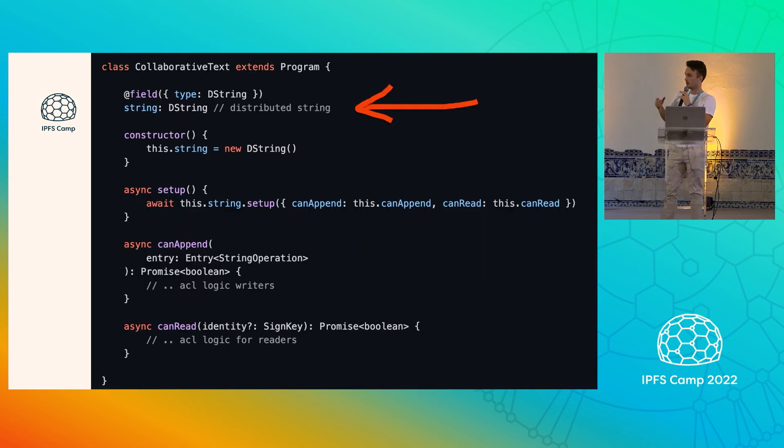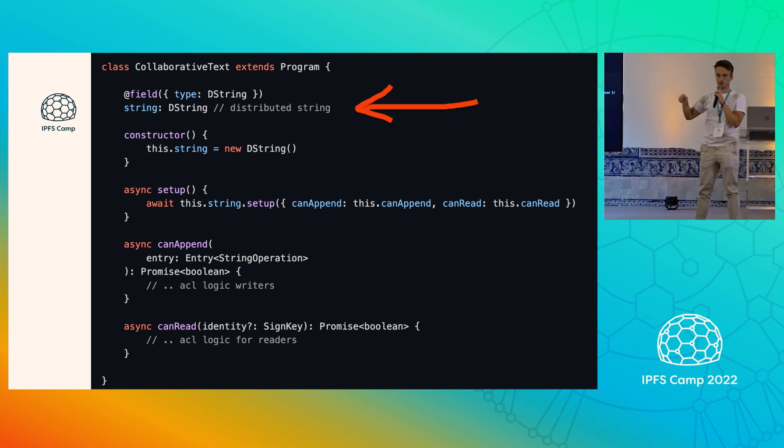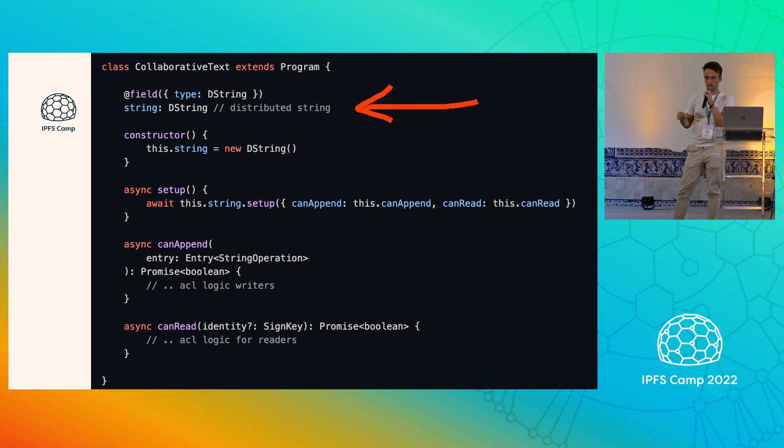And in all, everything is written in a super digestible way. So what you need to do to write these decentralized apps is just to use our primitives. So if you want to build, for example, a collaborative text document, the only thing you need to do is to extend our program framework and use D string instead of string for distributed string.